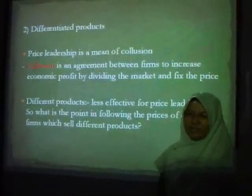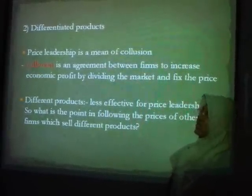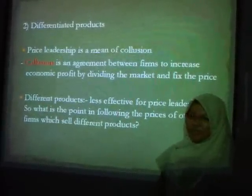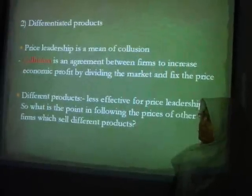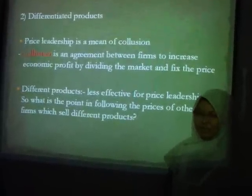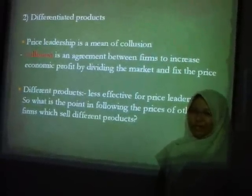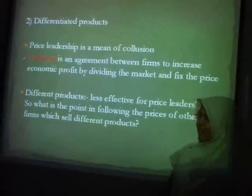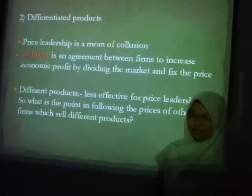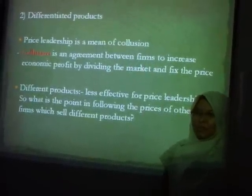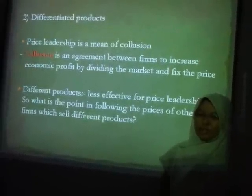The second obstacle is differentiated products. Price leadership is actually a different type of coalition — an agreement between firms to increase economic profits by dividing the market and fixing the price. If the products are different, price leadership will be less effective. What is the point for firms to follow the price of other firms if their products are different?